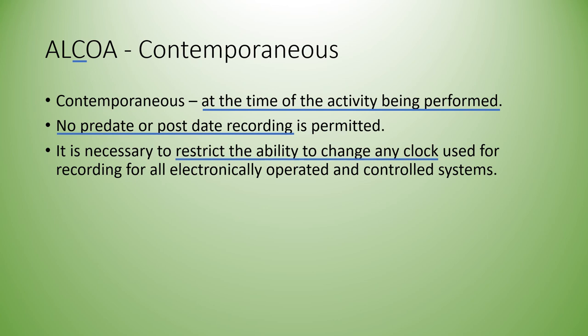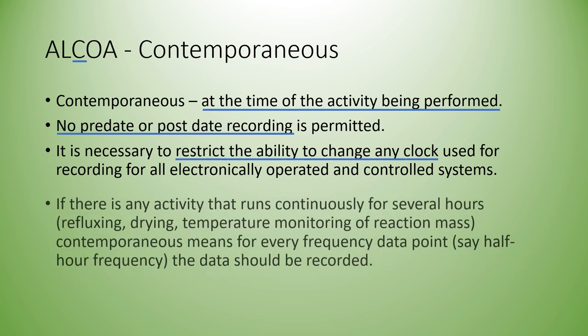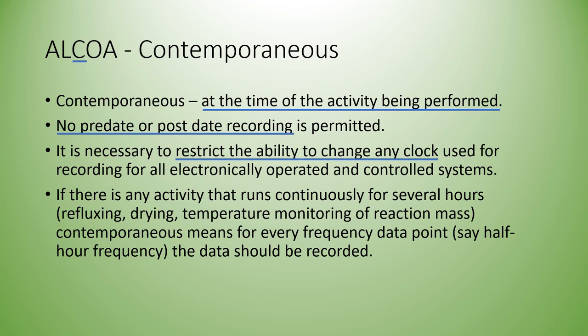In one organization, it was found that after releasing a batch record, the QC chemist punched the out time as 1805 hours, but the outpunch at the gate office recorded was 1800 hours for the same QC chemist — a difference of 5 minutes between the QC lab time and the gate office time. For activities that run continuously, like refluxing, drying, temperature, and monitoring of reaction mass, contemporaneous means data should be recorded at every frequency data point, say half-hour frequency. If data is not recorded contemporaneously, inconsistency can be caught very easily by the reviewer.